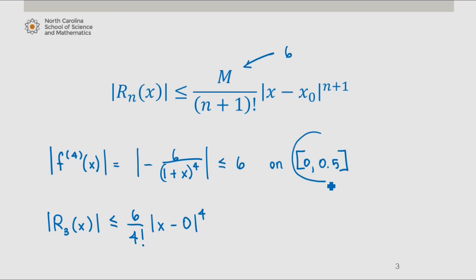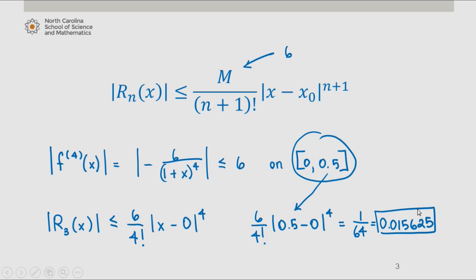Now on the interval from 0 to 0.5, the error in using this third degree Taylor polynomial to approximate natural log of 1.5 is, at most, 6 divided by 4 factorial times 0.5 minus 0 to the fourth, because that will give us the largest value for this error. And that's equal to 1 over 64, which is equal to 0.015625. And there is the maximum error associated with using the third degree Taylor polynomial to approximate natural log of 1.5.